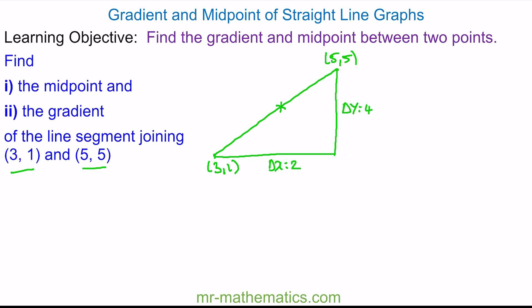So the midpoint will be half of the change in x, which is 1, so the midpoint x value will be 3 plus 1, which is 4. And the y value will be half of 4, which is 2, added to the 1, which gives us 3. So the coordinate (4, 3) is our midpoint.